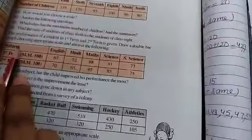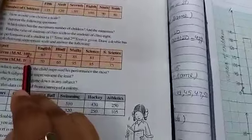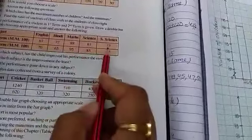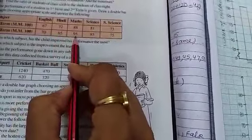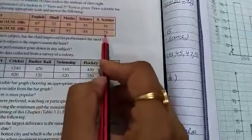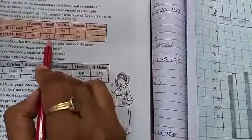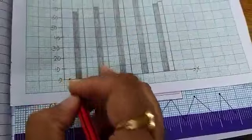Now see next question. Double bar graph. Subject: English, Hindi, Math, Science, SST. In first term, out of 100, scores were: English 67, Hindi 72, Maths 88, Science 81, SST 73. In second term: English 70, Hindi 65, Maths 95, Science 85, SST 75. Now we will make double bar graph. Draw horizontal and vertical line. X axis and Y axis. Here minimum is 65 and maximum is 95. We can build it in intervals of 10. This is 0 point, the origin point. 10, 20, 30, 40, 50, 60, 70, 80, 90, up to 100.